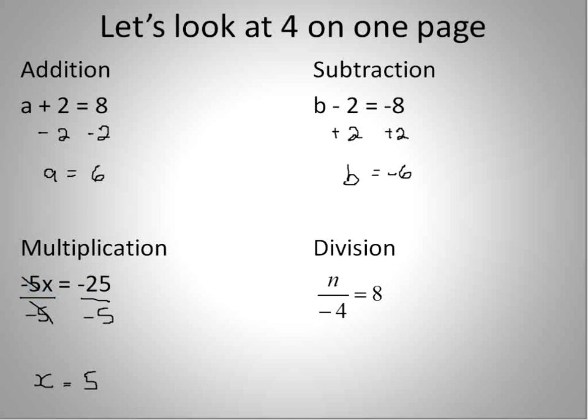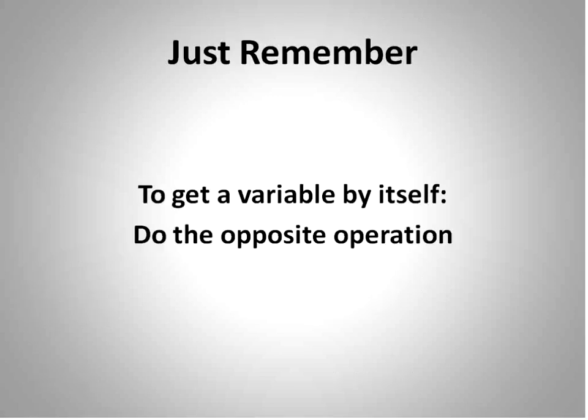And then our final question, n divided by negative 4, we're going to multiply both sides of this equation times negative 4, cancel each other out, n is equal to negative 32. So that's how we would solve those questions. Just remember to get a variable by itself. You do one thing. You do the opposite operation. That's it for today.